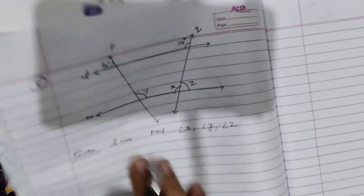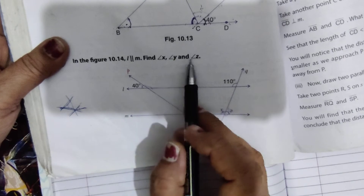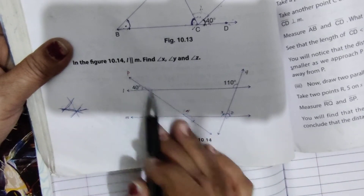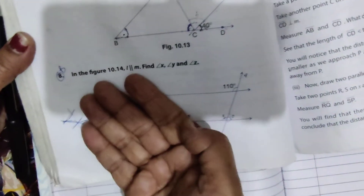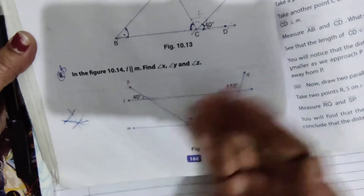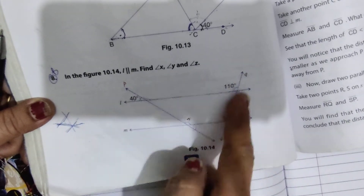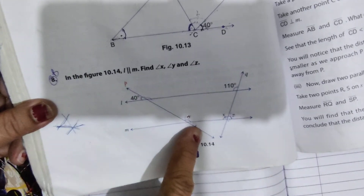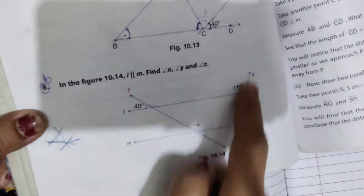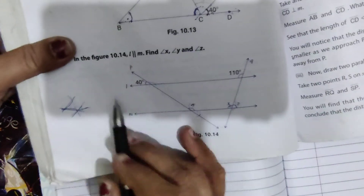Next is Sum number 8 — DAV Maths Chapter 8 Parallel Lines. Given L parallel to M, and we have to find angles X, Y, and Z. There are two transversals, P and Q, but P and Q are not parallel to each other. This means this part and that part are separate sums — we solve them separately using transversal P and transversal Q.